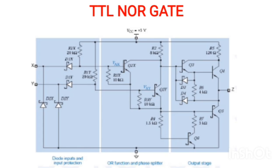Similarly, for x=1 and y=0, the output also becomes zero. When x=0 and y=1, one diode will be on and one will be off, but even with one diode on, the total voltage is grounded, so the output becomes zero. This is the working principle of NAND gates. It is an important topic for university examinations. Thank you.